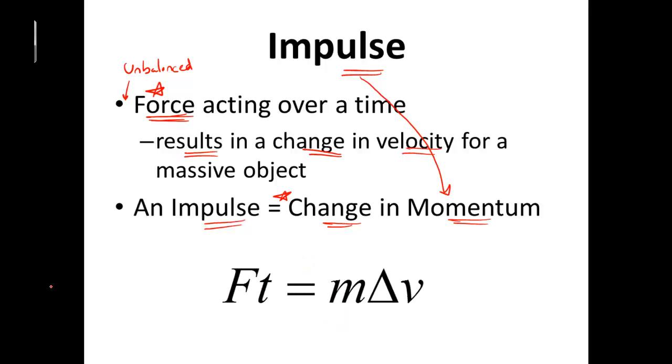So check out the formula for impulse. An impulse is going to equal a change in momentum, and that's what I want you to see over here. This is the change in momentum. Mass times change in velocity is going to equal a change in momentum. This over here, a force multiplied by time, that's my impulse.